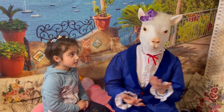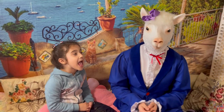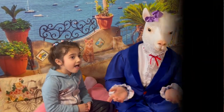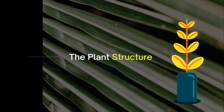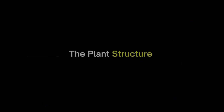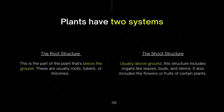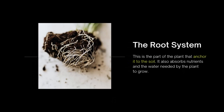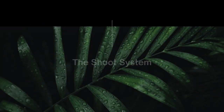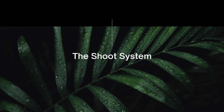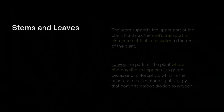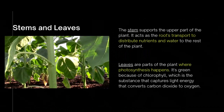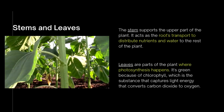Now that we know about the different parts of the plants, let me tell you about the shoot and root system in more detail. The plant has two structures: the root structure and the shoot structure. The root structure is the part of the plant that anchors it into the soil — it absorbs nutrients and water needed by the plant to grow. The shoot structure is made up of the stems and the leaves. The stem supports the upper part of the plant and transports nutrients and water to the rest of the plant.